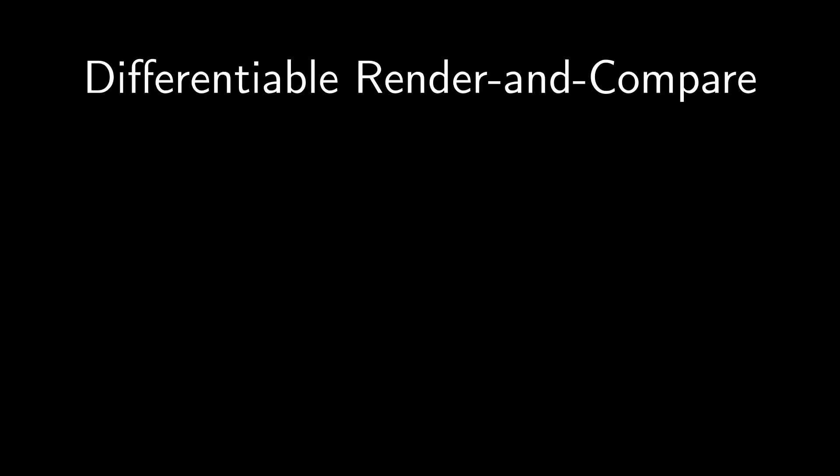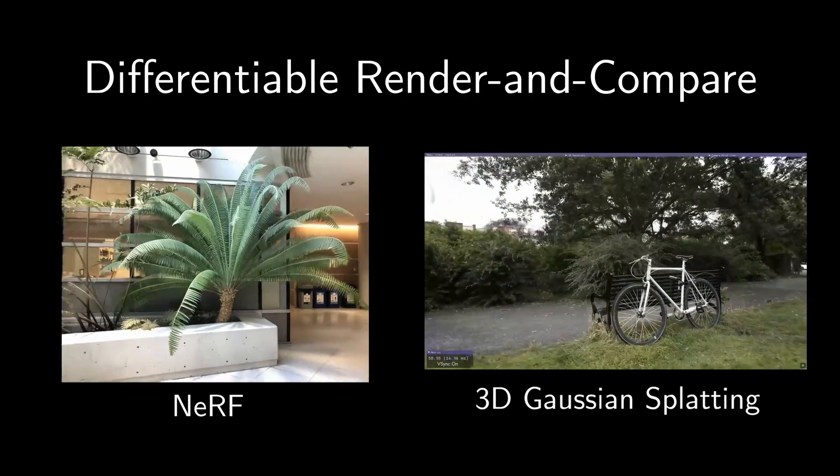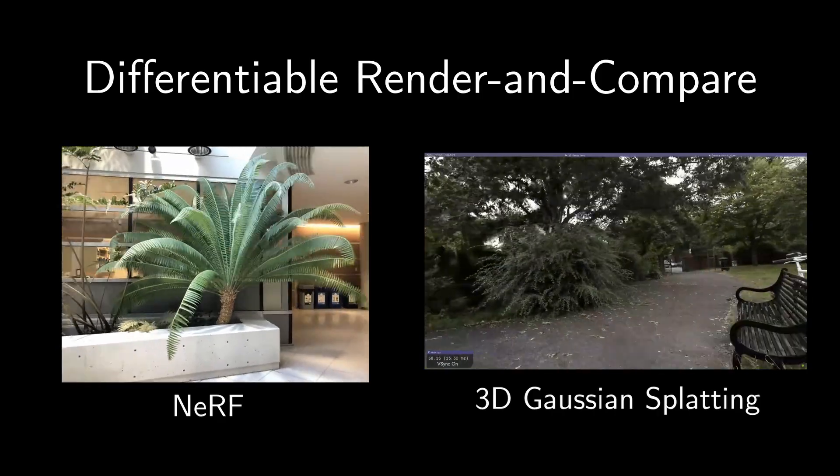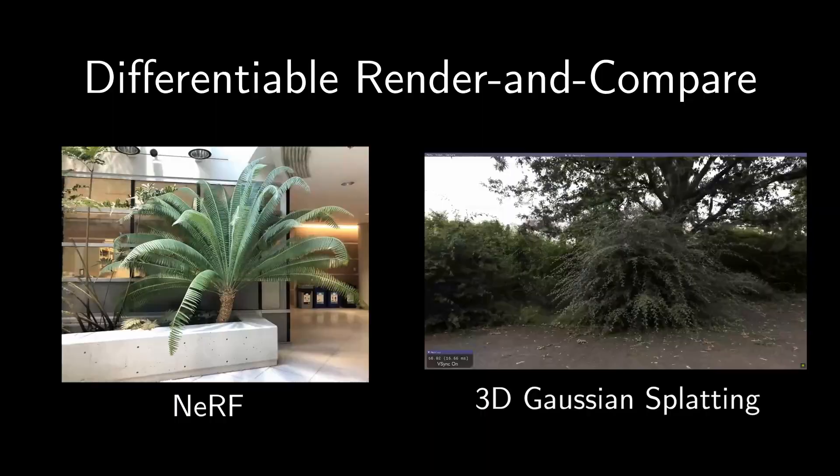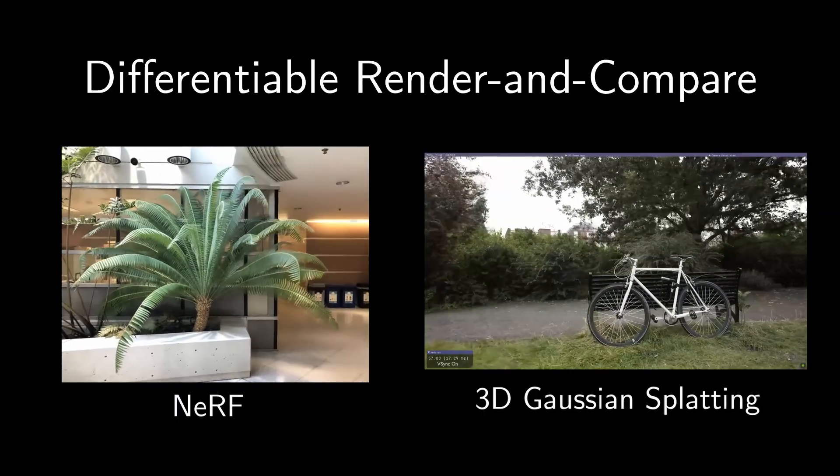Our method is based on a differentiable render-and-compare pipeline, the same idea behind methods like NeRF and Gaussian splatting. Our approach is similar to these in spirit, but takes as input a set of transient histograms rather than RGB images and aims for accurate 3D reconstruction rather than novel-view synthesis.